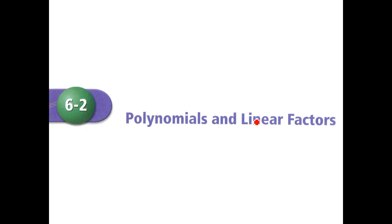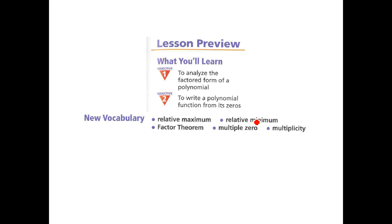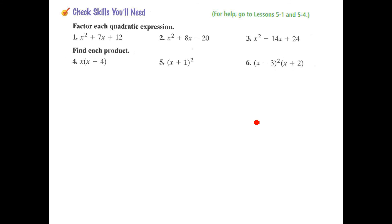We're done with 6.1. We're moving on to 6.2 polynomials and linear factors. We'll need to analyze the factored form of a polynomial and then write the polynomial from its zeros. A bunch of things we're going to go through here, relative max and relative minimum, factor theorem, multiple zero, and multiplicity. Factor each quadratic expression with your skills checks to start and then find each product. Take a second, try those six problems, come back, we'll move into 6.2.